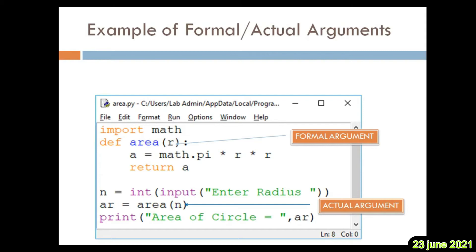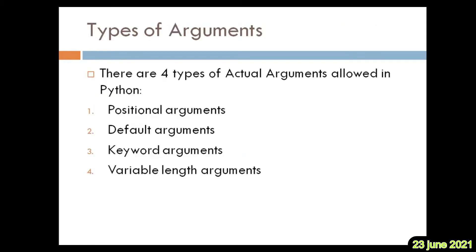Now, these parameters or arguments can have four types. There are four types of actual arguments allowed in Python. Number one: positional arguments. Number two: default arguments. Number three: keyword arguments. Number four: variable length arguments. Let us see these one by one.